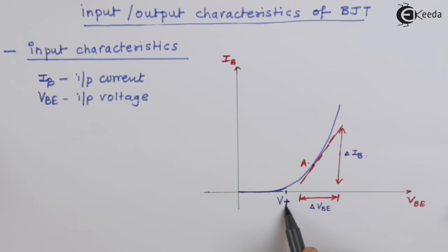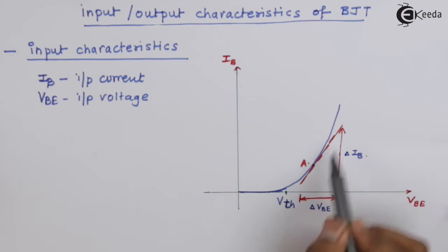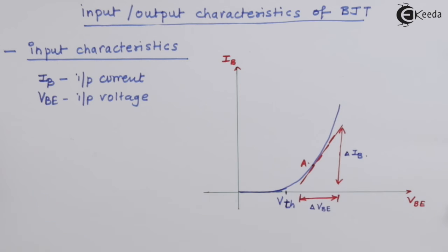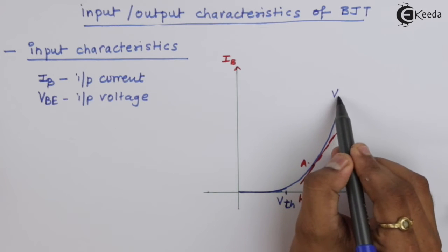For a silicon bipolar junction transistor the value of this threshold voltage is 0.7V. Don't confuse this with the thermal voltage, which is 25.8 millivolts and is constant at normal temperature. So this is the graph of the input characteristics. We can also change another parameter, Vce, the output voltage.